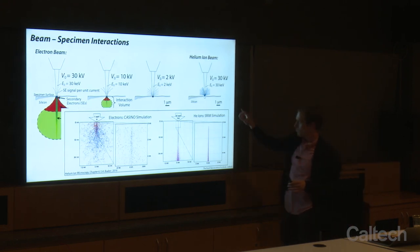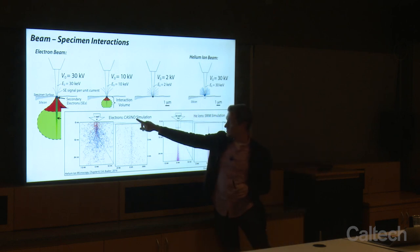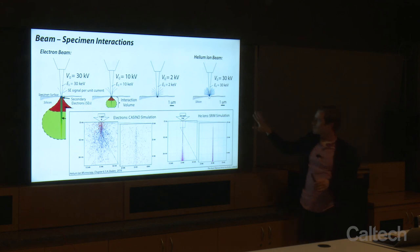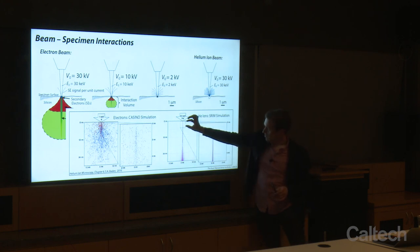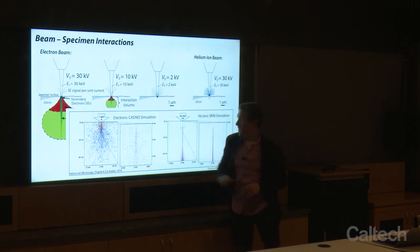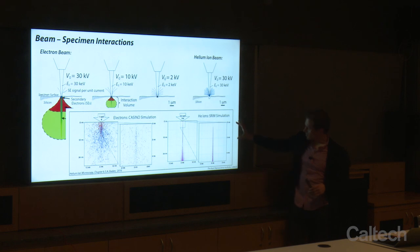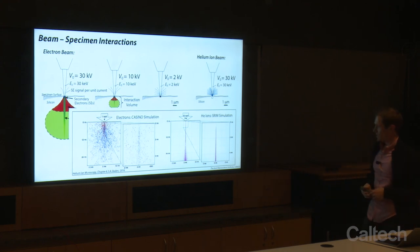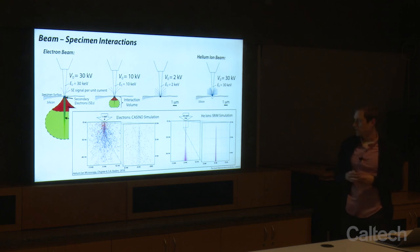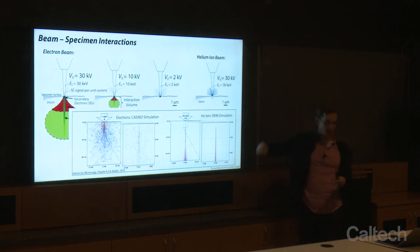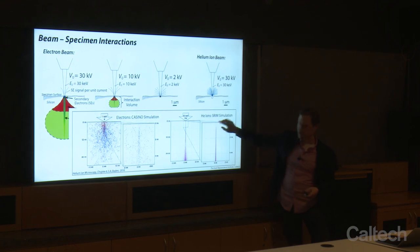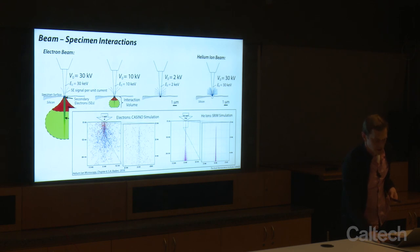We simulate interaction volumes with Casino software for electron beams, and SRIM for helium ions. If we really zoom in to the top 25 nanometers, we see how narrow the beam is relative to the SEM at 1 kV. If we zoom in even further to the top 5 nanometers, the beam is really just cutting a very sharp path through the top of the substrate. That keeps secondary electron emission localized to where the beam enters, giving us high resolution. A 0.5 nanometer probe size combined with localized scattering is how we get those nice images.